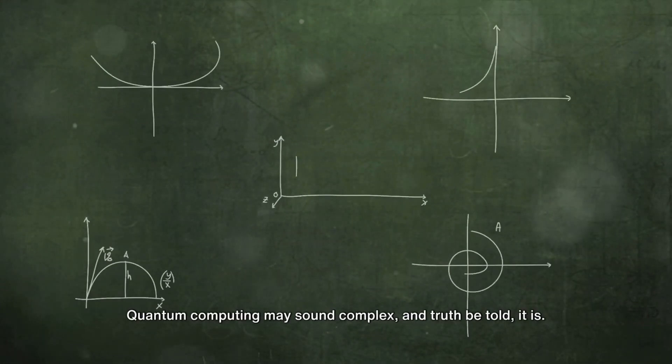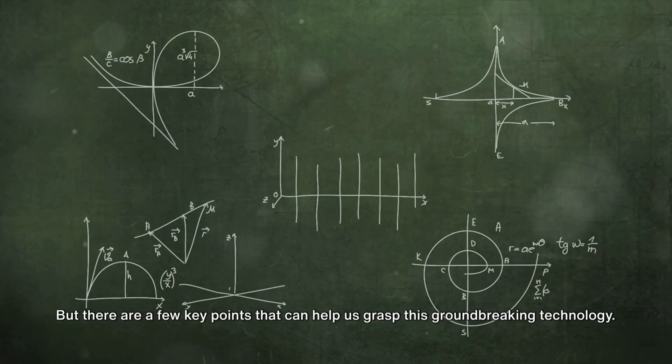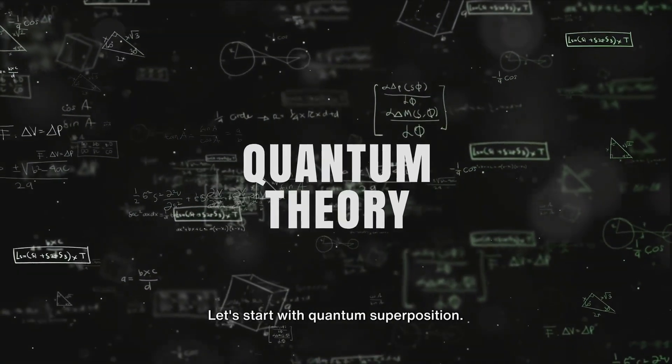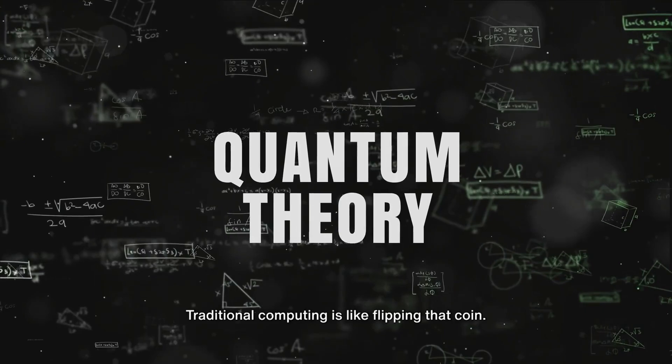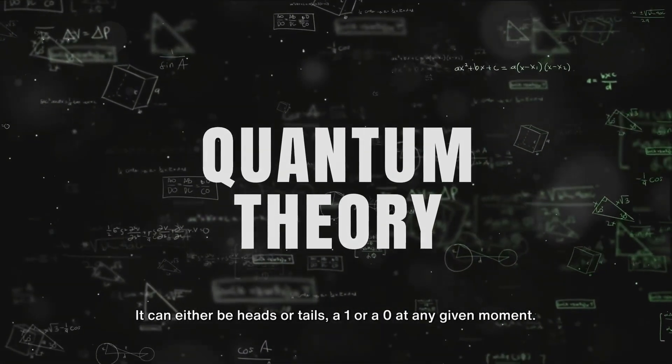Quantum computing may sound complex, and truth be told, it is. But there are a few key points that can help us grasp this groundbreaking technology. Let's start with quantum superposition. Picture a coin. Traditional computing is like flipping that coin. It can either be heads or tails, a one or a zero at any given moment.